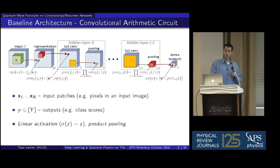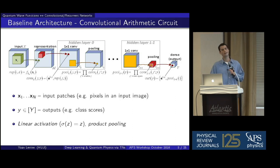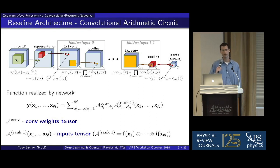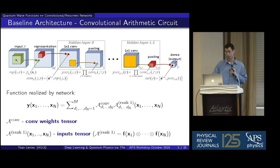We discuss convolutional networks that take an image with N pixels, perform L hidden layer operations subsequently, and output for example a class score — is this more likely to be an image of a cat or a dog? We analyze a convolutional arithmetic circuit in which non-linearities boil down to polynomials, which helps us analyze it theoretically. Because of the arithmetic nature, we can write the function realized by this convolutional network as an inner product between two order-N tensors: a convolutional weights tensor holding the network's weights, and a rank-one tensor formed by an outer product of the N input vectors.